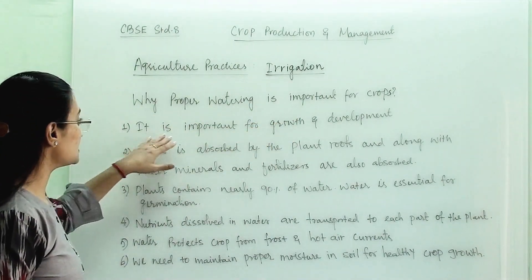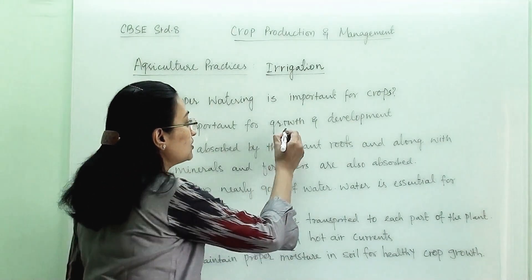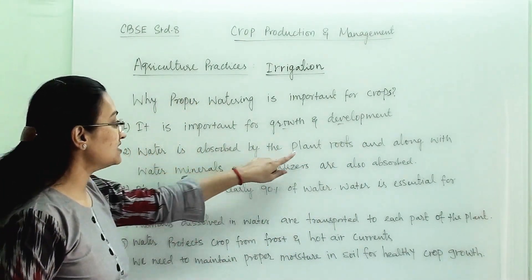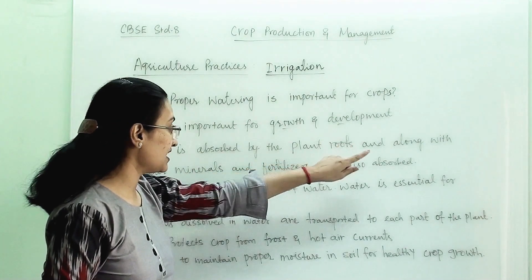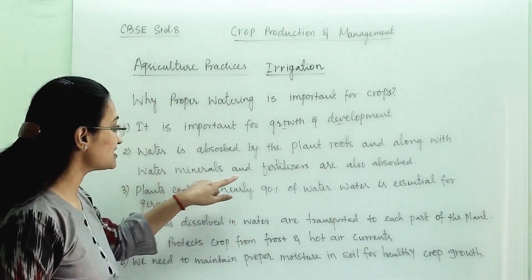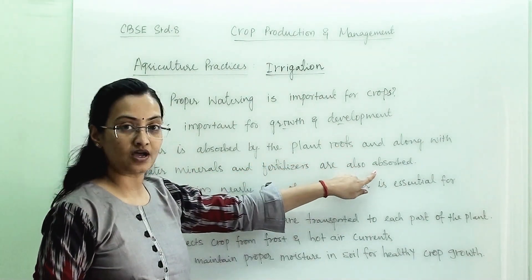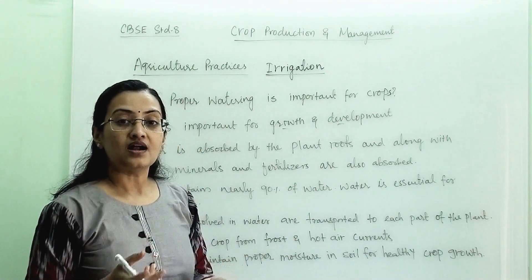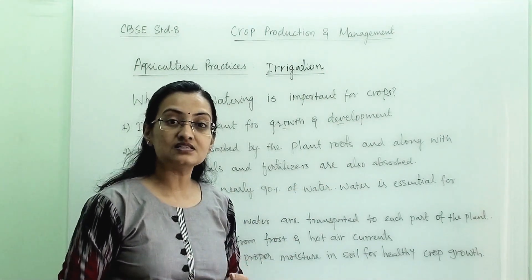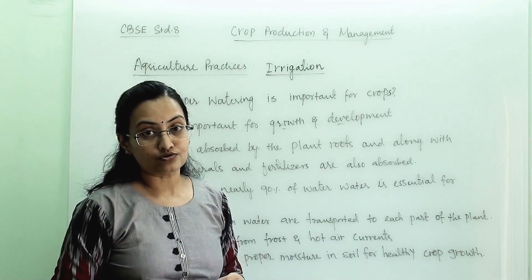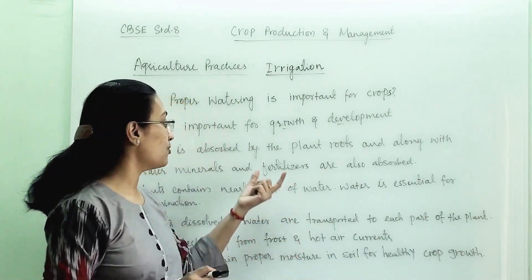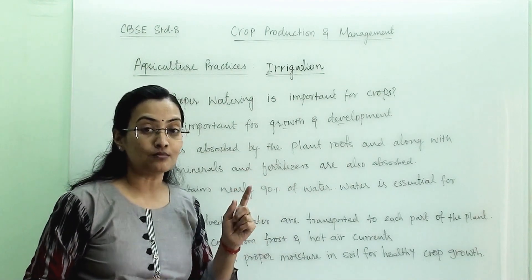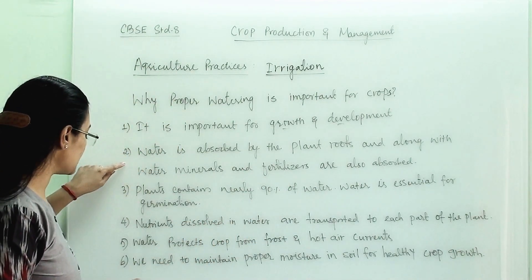First, water is important for the growth and development of plants. Second, water is absorbed by the plant roots, and along with the water, minerals and fertilizers are also absorbed. These are important for healthy plant growth and for maximum yield.